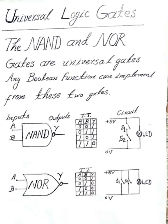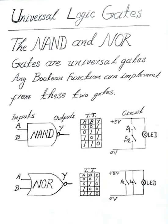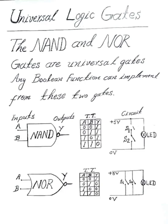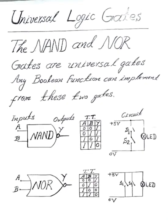Hello, Universal logic gates. The NAND and NOR gates are universal logic gates. Any Boolean function can implement from these two gates.